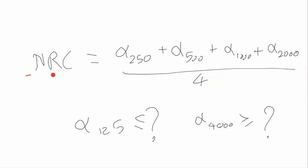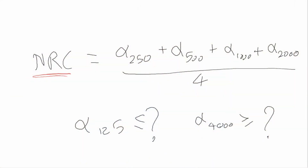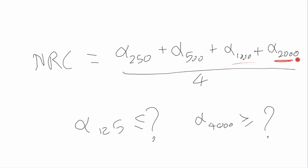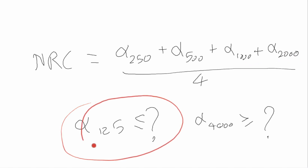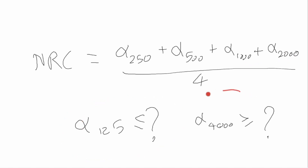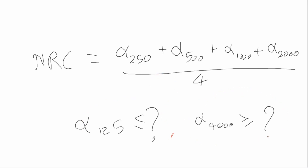Noise reduction coefficient, or NRC, is defined as the average of the absorption coefficients at 250Hz, 500Hz, 1000Hz, and 2000Hz octave bands. Octave bands of 125Hz and below and 4000Hz and above are ignored in this calculation.